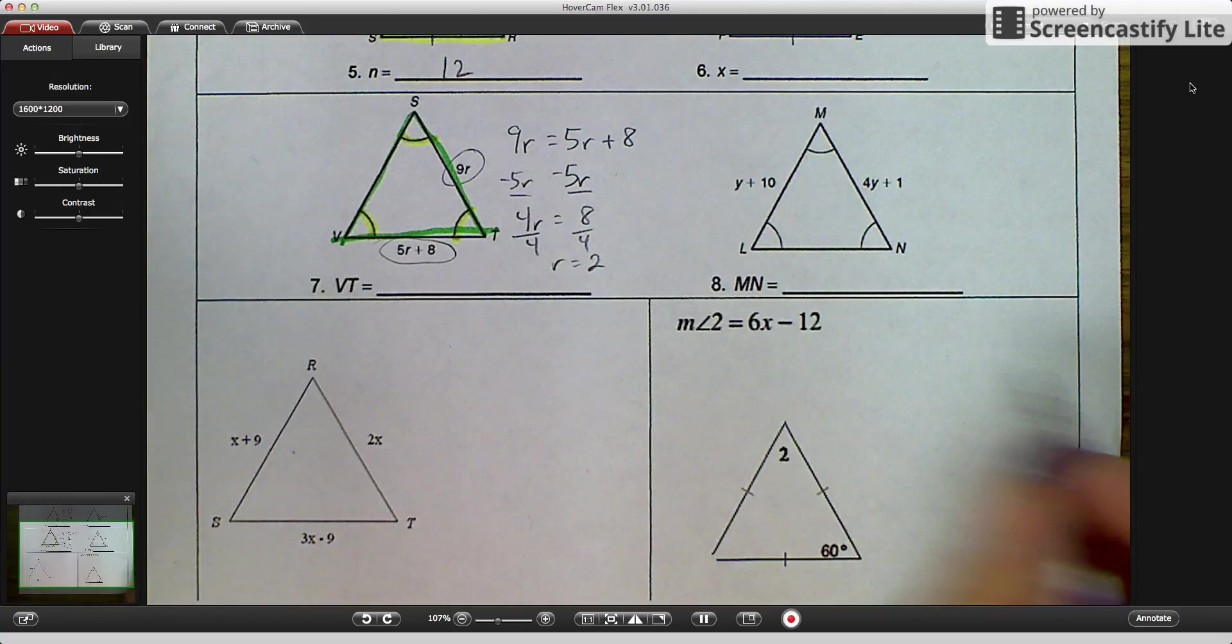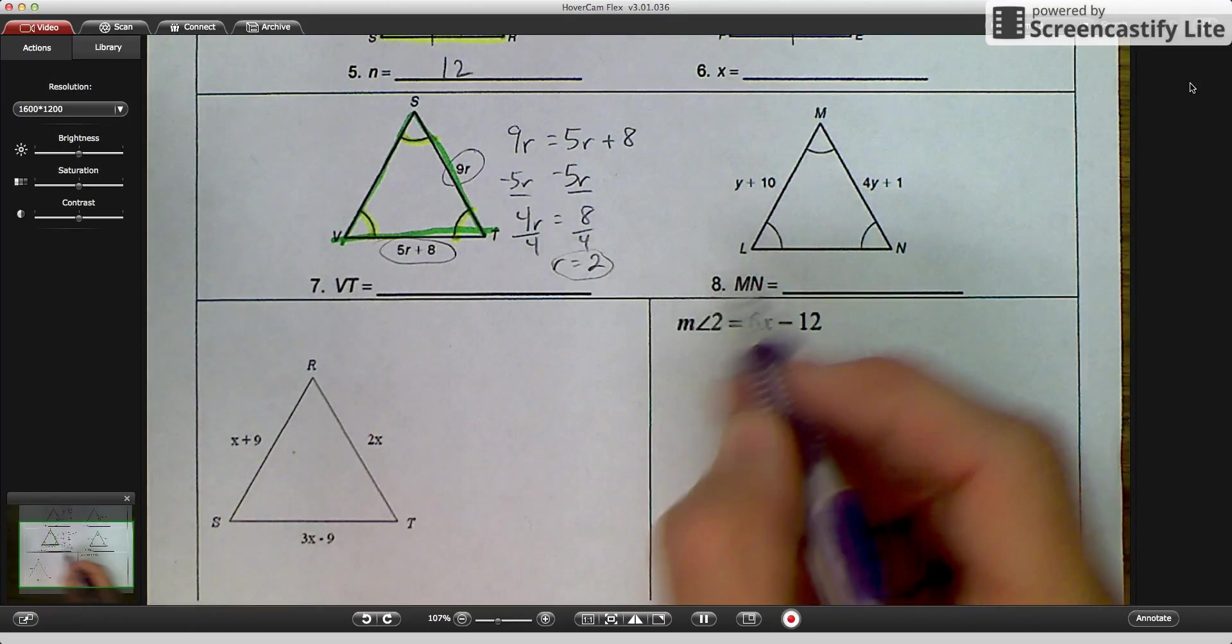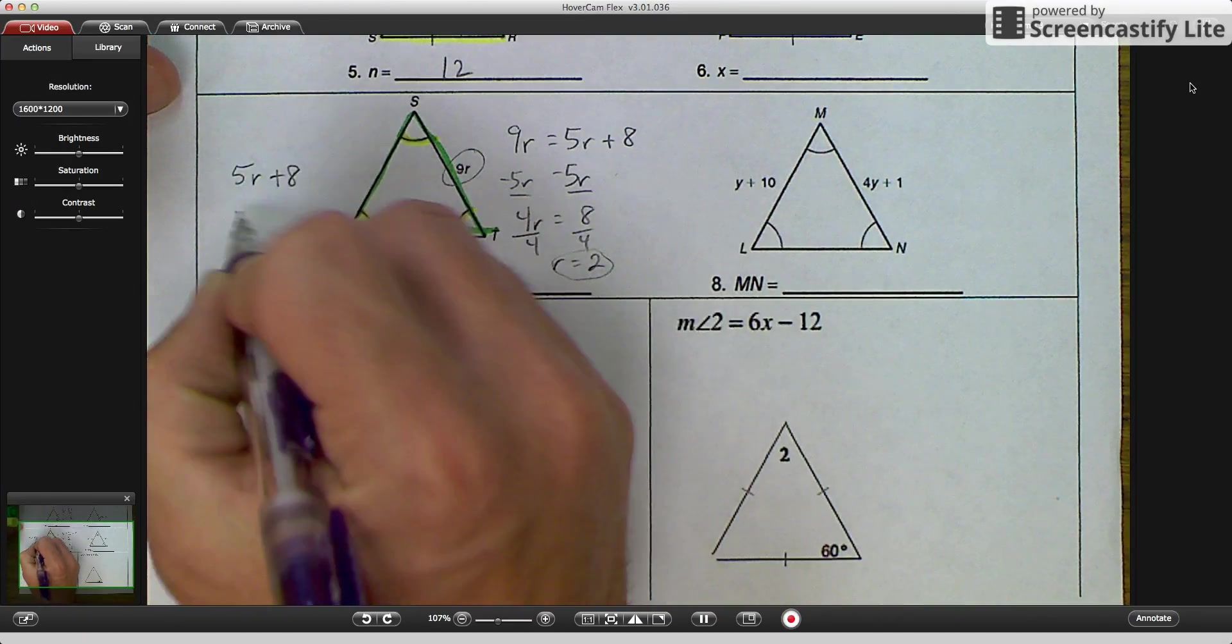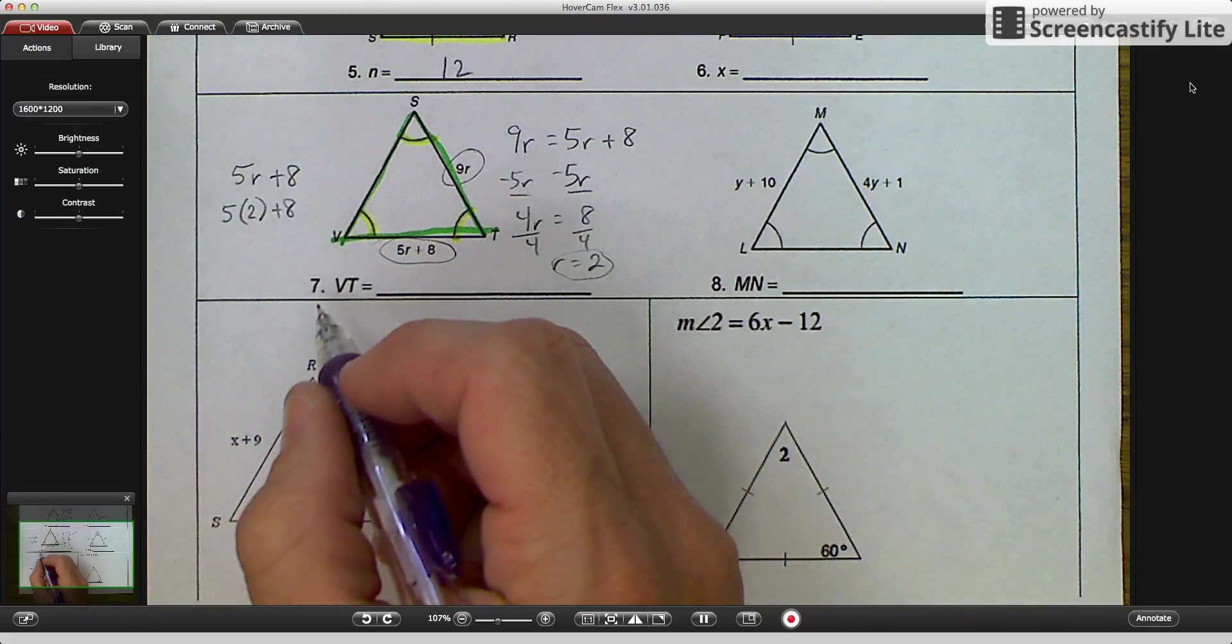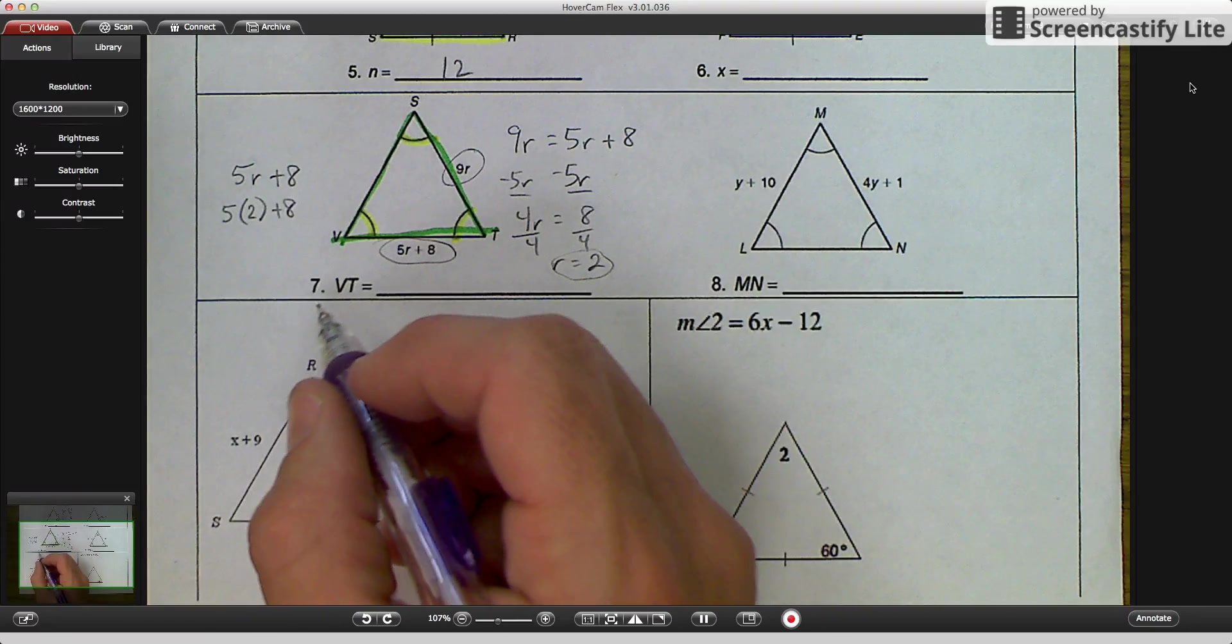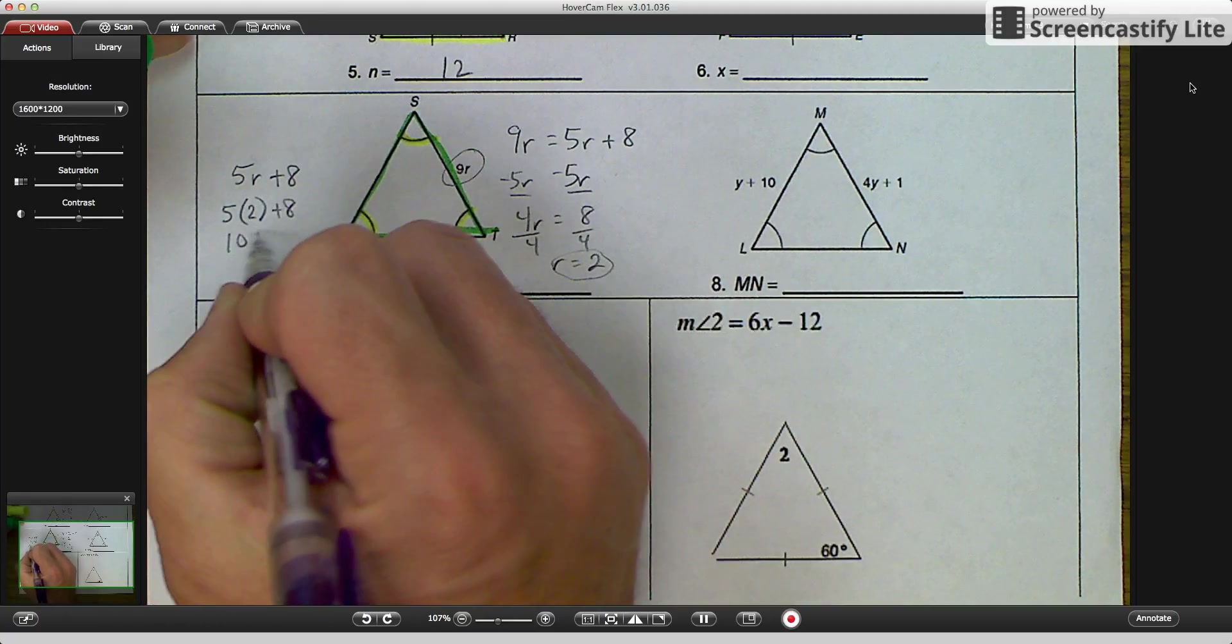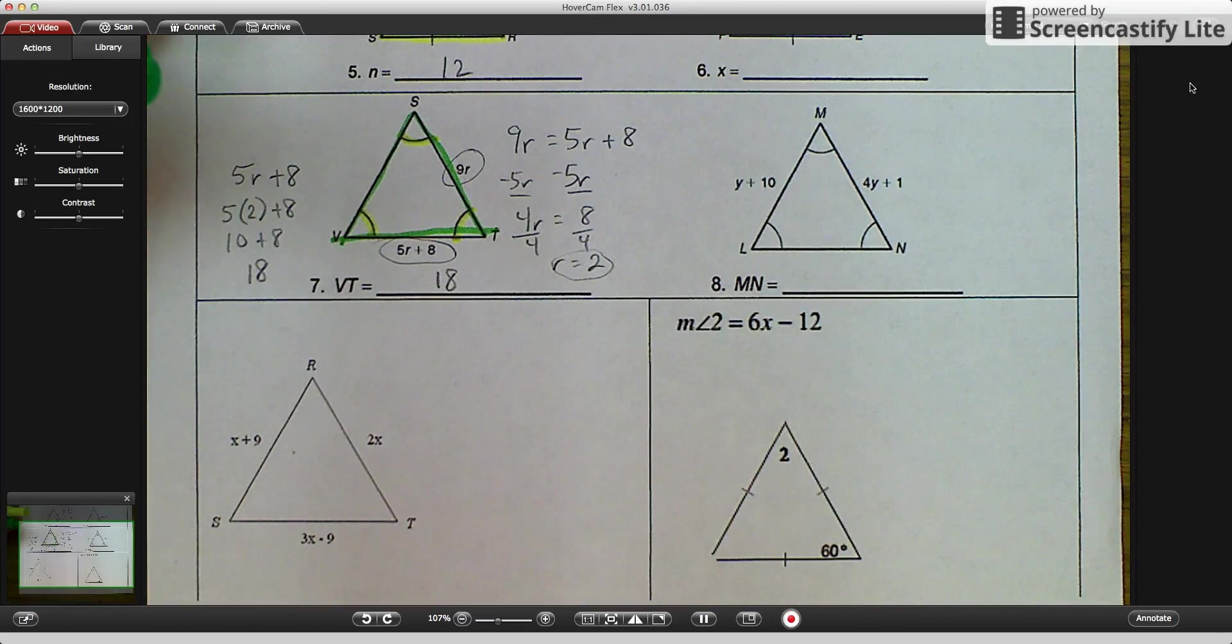So we know that r equals 2, and if r equals 2, then VT is 5r plus 8. So I'll take it over here, and 5r plus 8 would be 5 times 2 plus 8. Now, we're dealing with sides, so they don't have to add up to 60 or 80 or 180 or 90. We're just finding a measurement of a side here. So that would be 10 plus 8, which is 18.